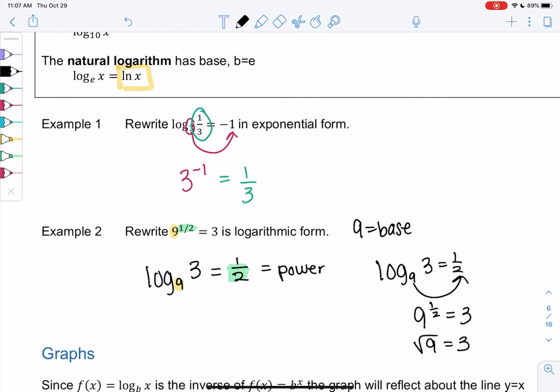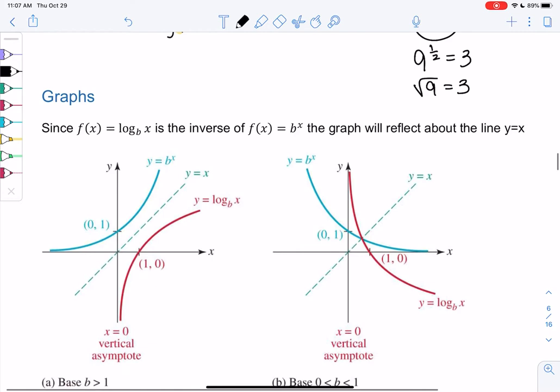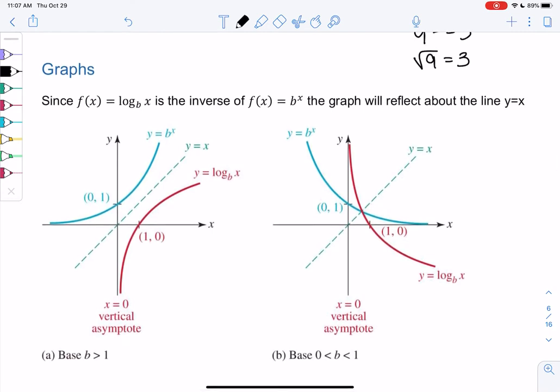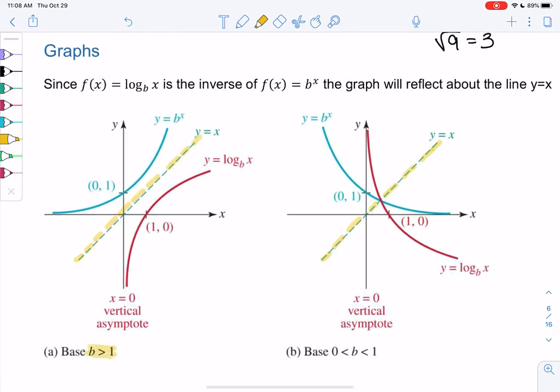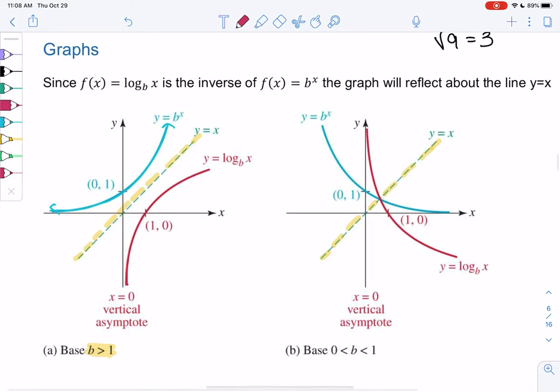We're not going to graph logs too much, but you do need to know one graph for calculus. So I'll just review the graphs and let you know which one you need to know. Since the log base b of x is the inverse of b to the x, it will reflect about the line y equals x. So that's that diagonal down the middle. My first graph we'll look at when the base is bigger than 1. That's flat, and then it goes up for b to the x. And so log base b of x will just be the reflection about y equals x. So it goes up and then it flattens out, but it still goes up forever. It just goes up very slowly.